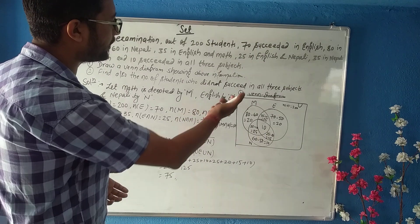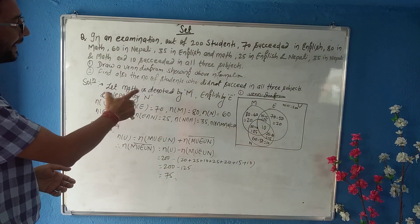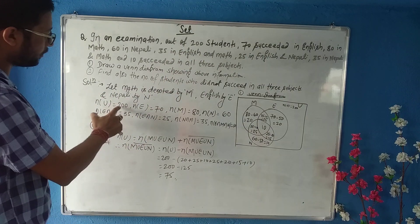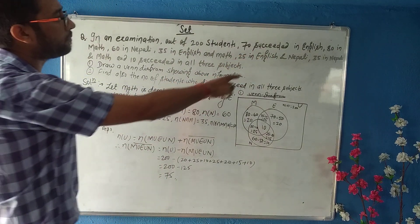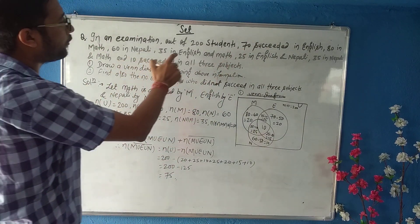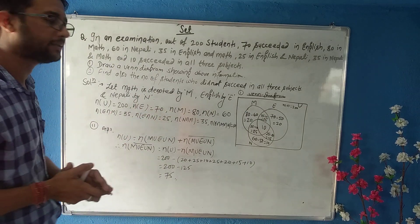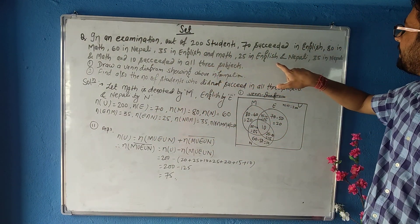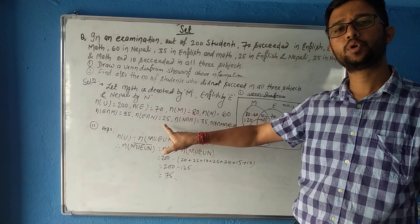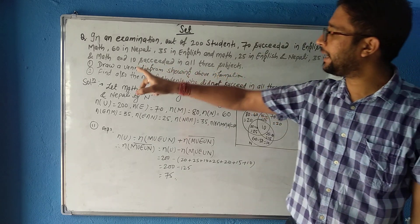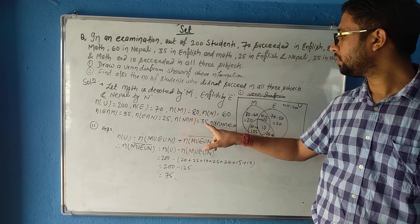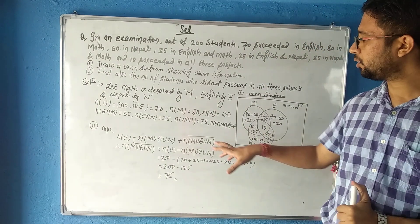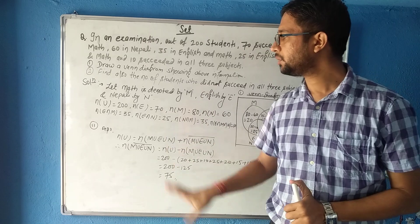First we should note the given values. Let math be M, English be E, and Nepali be N. Total students: n(U) = 200. n(E) = 70, n(M) = 80, n(N) = 60. E∩M = 35, E∩N = 25, N∩M = 35. All three: E∩M∩N = 10.